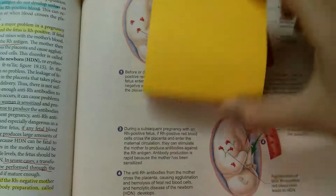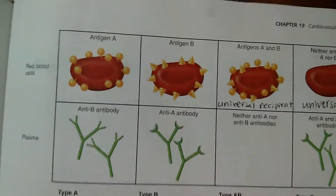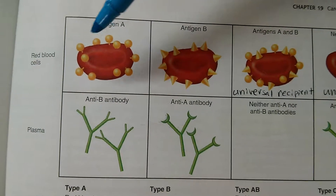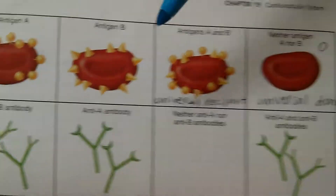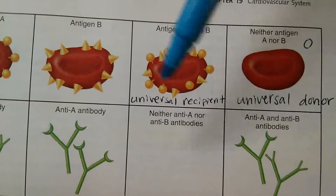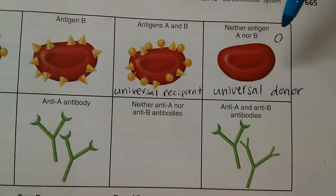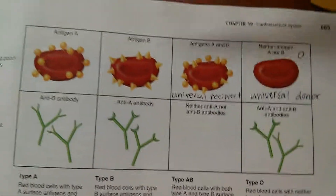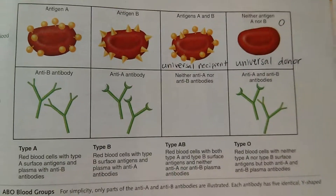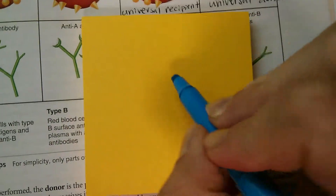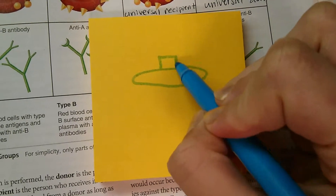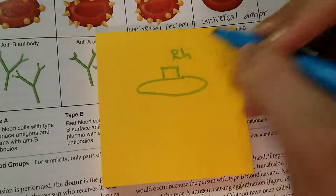Antigens are little marker molecules on a red blood cell that mark it as its own. A type A person has a certain type of antibodies, a type B person has different shape antibodies, type AB has two different types, and type O doesn't have any at all. One that's not on this chart is the Rh antigen. Since A is represented by circles, type B by triangles, and type AB by both, let's make the Rh representative of a square. So this will be the Rh antigen.